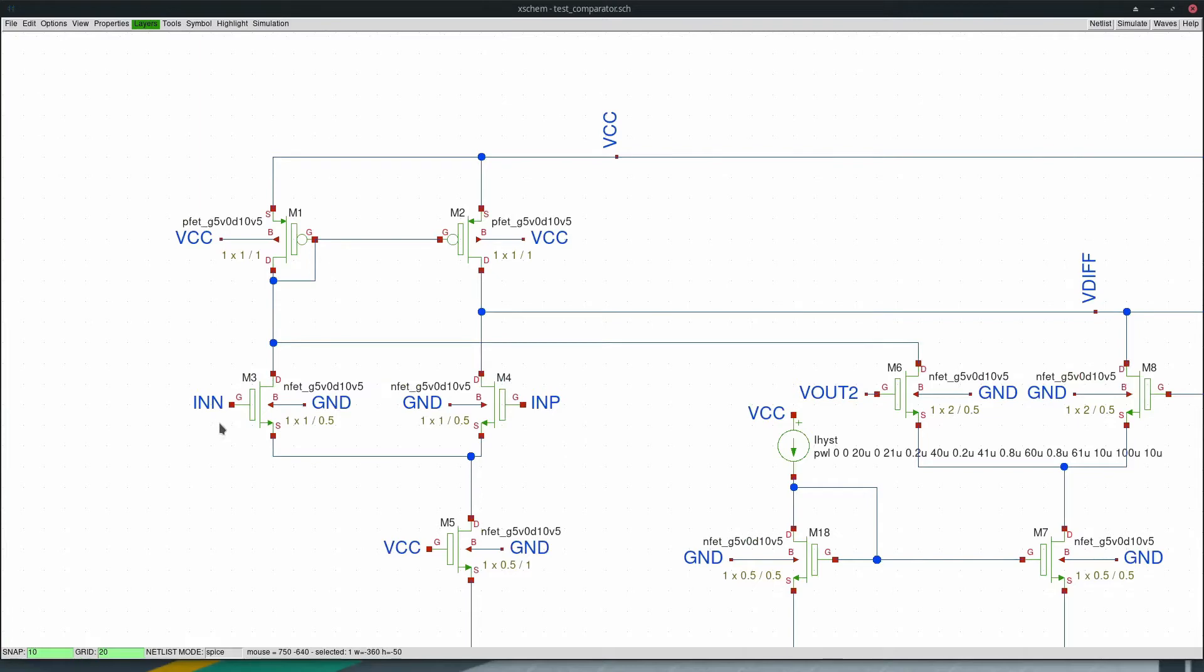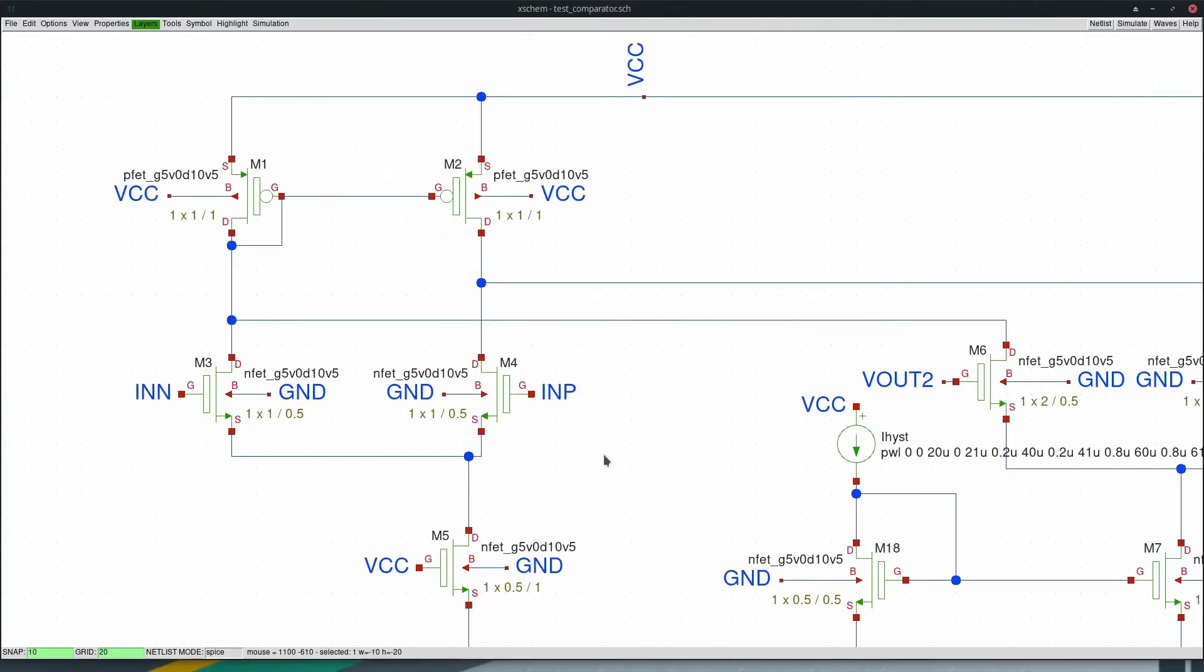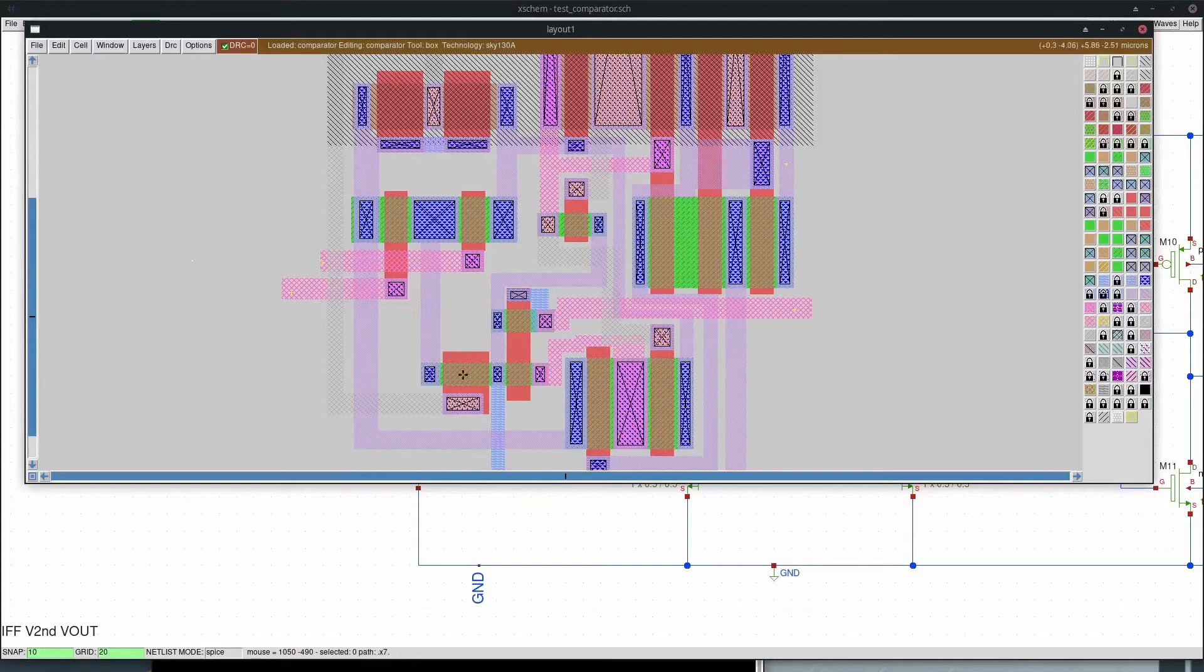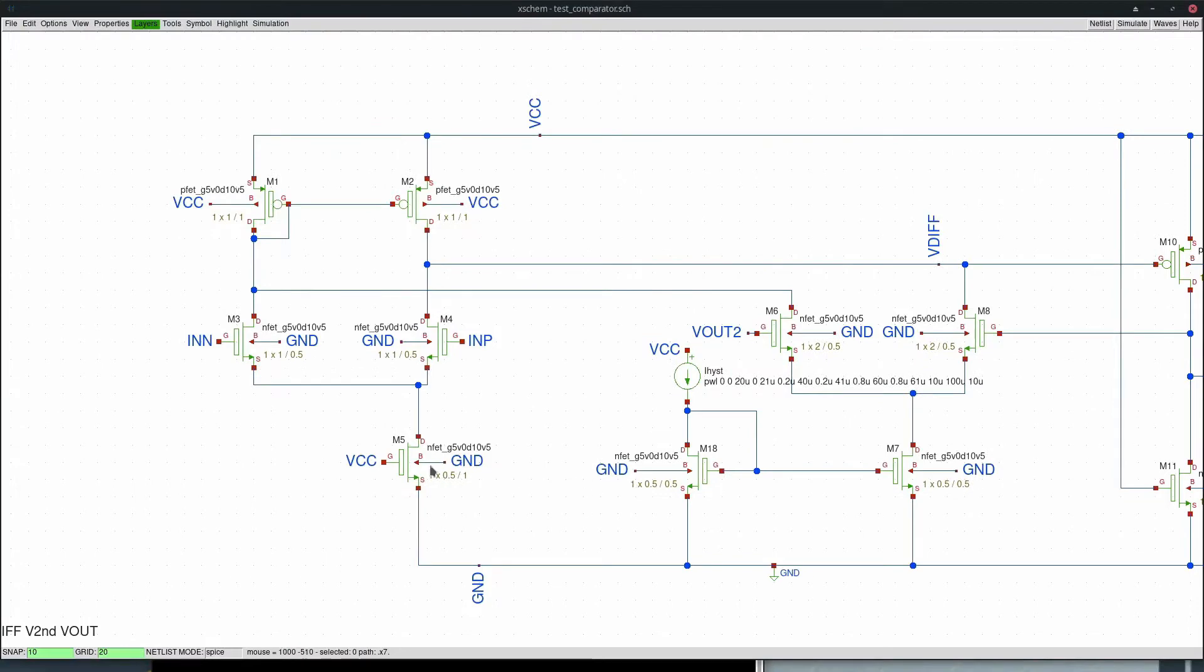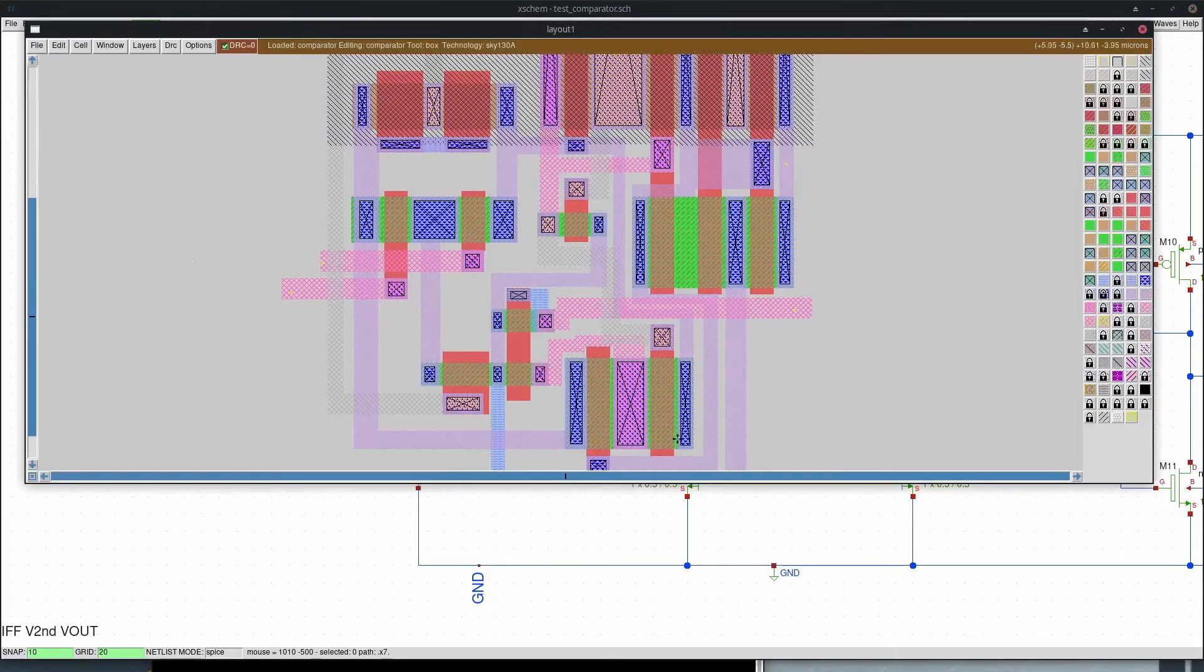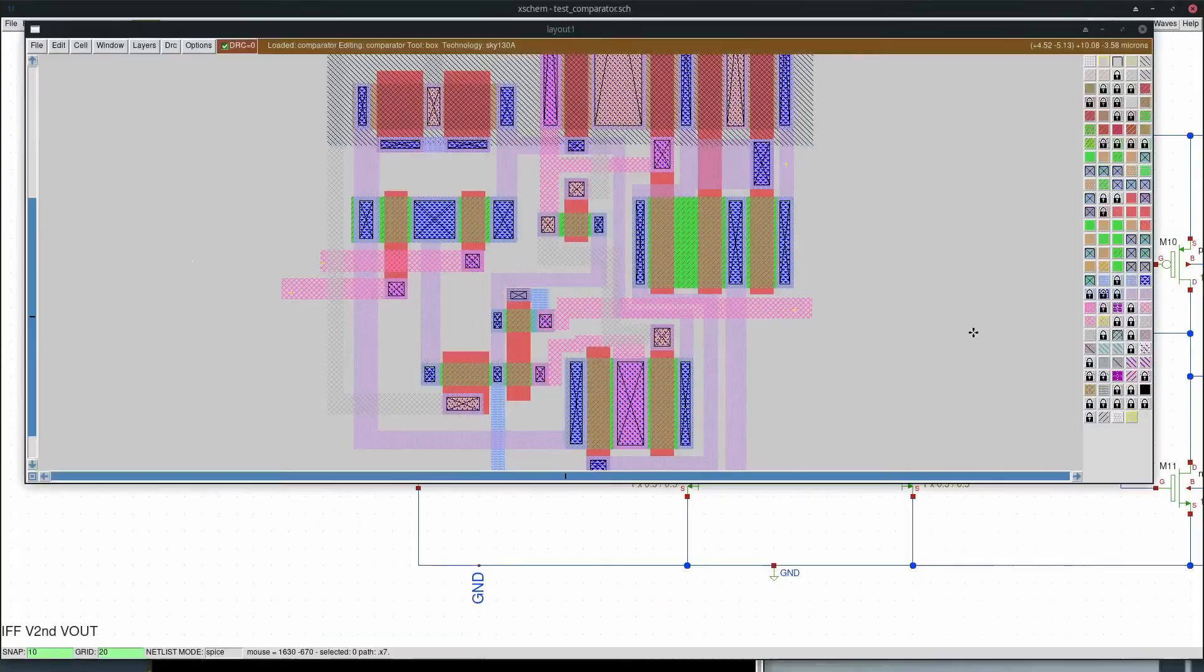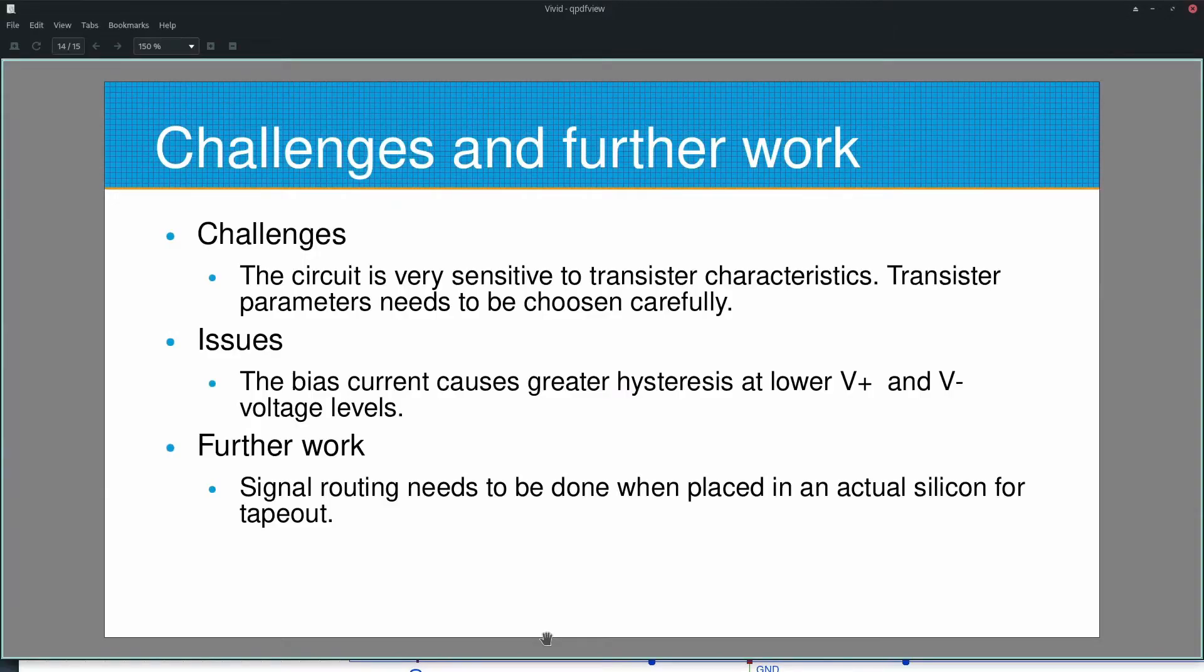We have a positive input, we have a negative input. These are the differential inputs. We have an IHIST which is the M5 transistor. These two are our feedback transistors here M6 and M8. We will have to make sure that appropriate metals are used and the signals come in and go out the appropriate way. Thank you.